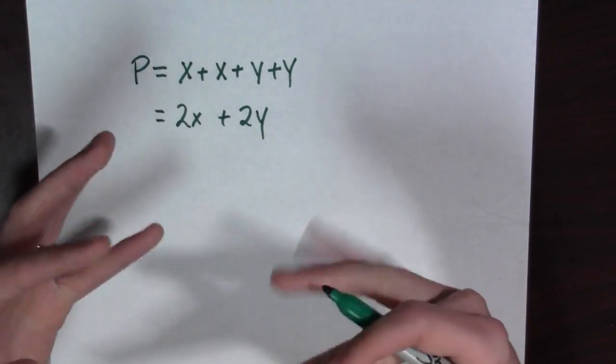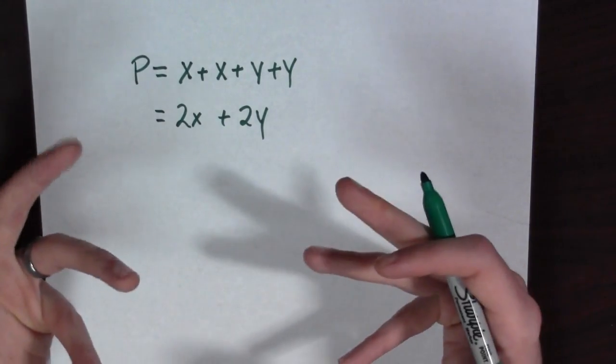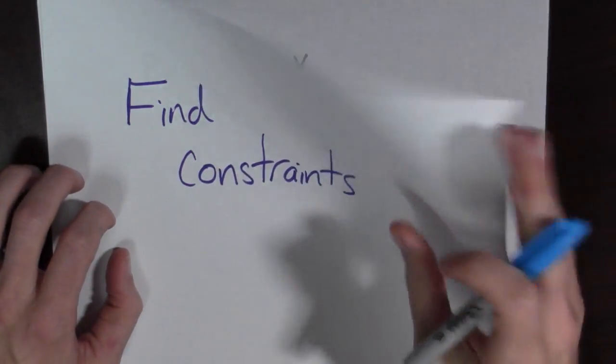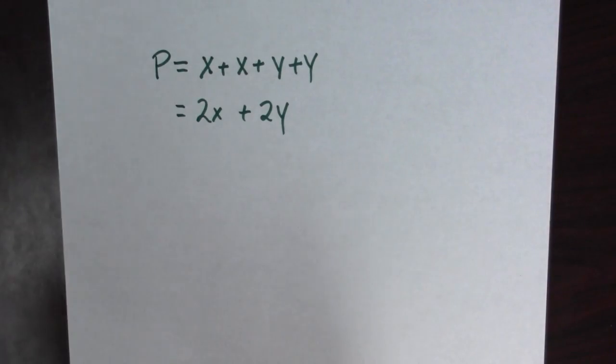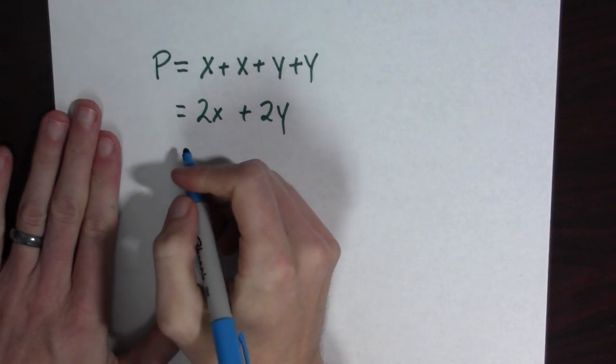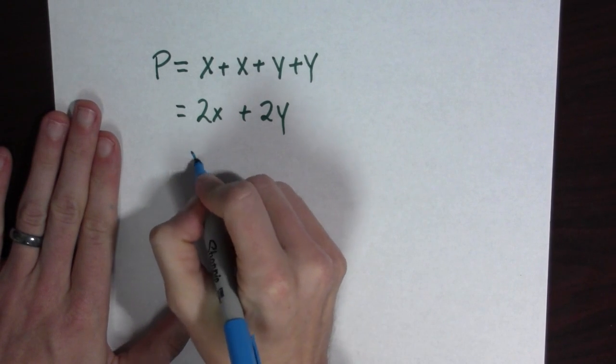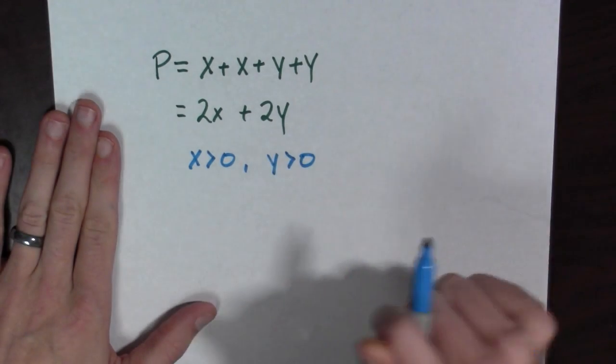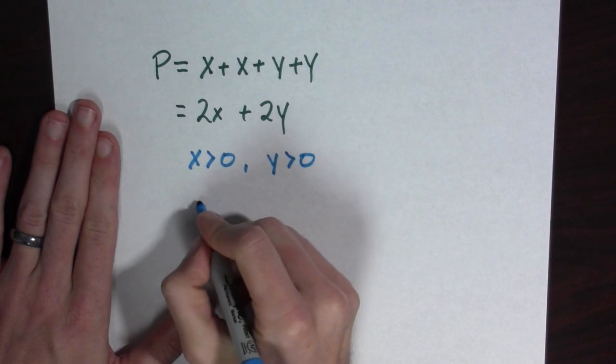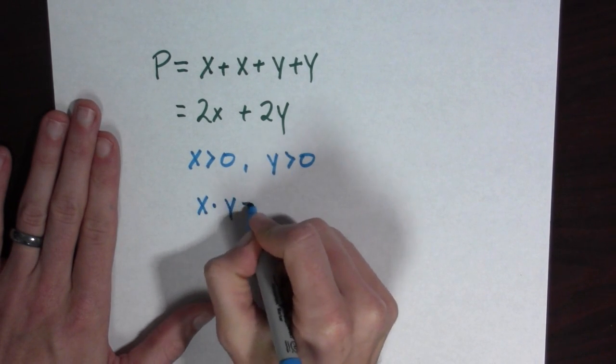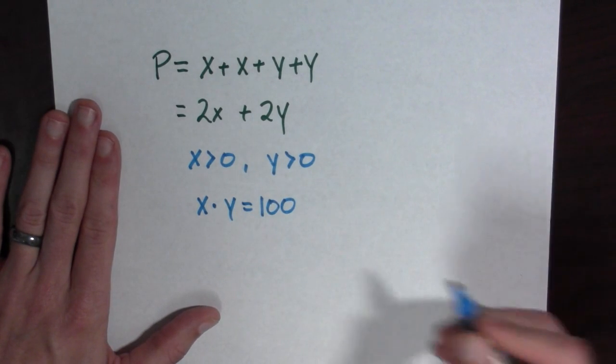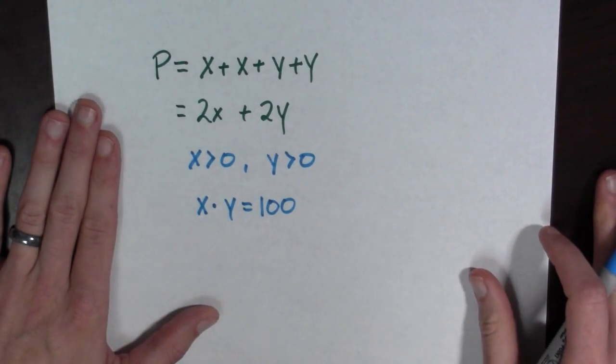We want to somehow minimize this perimeter. Use your awesome algebra skills to find constraints. Alright, let's look at our perimeter again. Well, there's some things that we know. So first of all, we know that x is greater than zero and we know that y is greater than zero. And we also know that x times y had better equal 100.